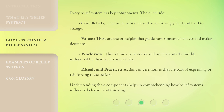Every belief system has key components. These include: core beliefs — the fundamental ideas that are strongly held and hard to change; values — the principles that guide how someone behaves and makes decisions; worldview — how a person sees and understands the world, influenced by their beliefs and values; and rituals and practices — actions or ceremonies that are part of expressing or reinforcing these beliefs. Understanding these components helps in comprehending how belief systems influence behavior and thinking.